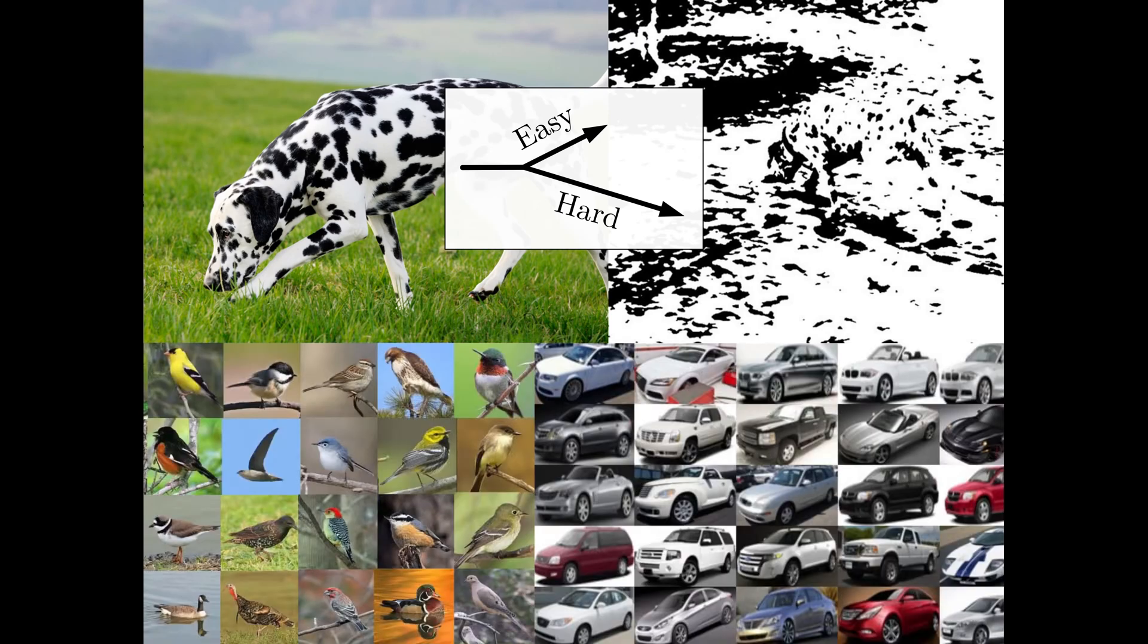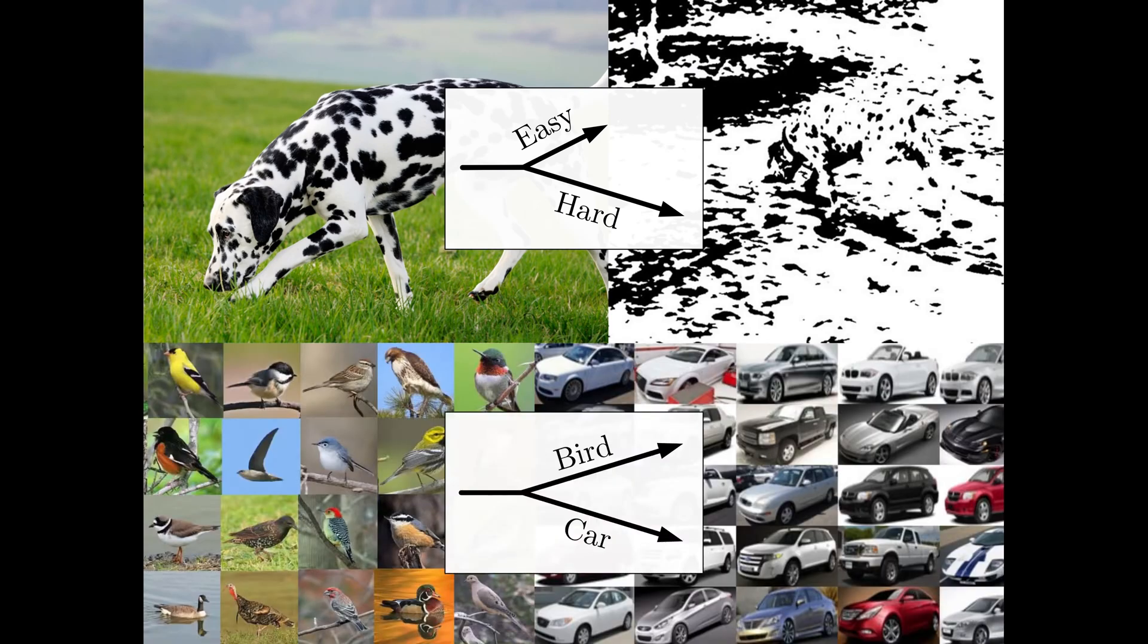Also, understanding some images requires specialized knowledge. Branching architectures allow components to specialize.